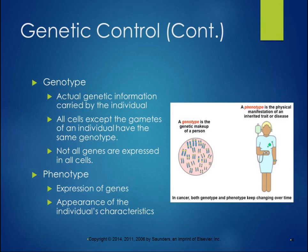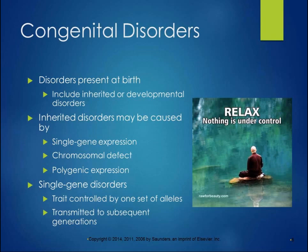The phenotype is the expression of the genes — the appearance of your individual characteristics. When we talk about disorders, the genotype is the genetic makeup and the phenotype is the physical manifestation of the inherited trait, disorder, or disease. In cancer, both genotype and phenotype can keep changing over time because of the many mutations occurring, and we'll talk more about that in Chapter 20.